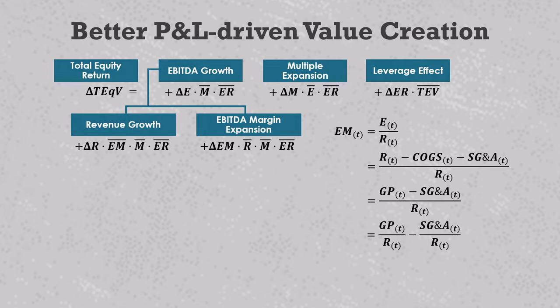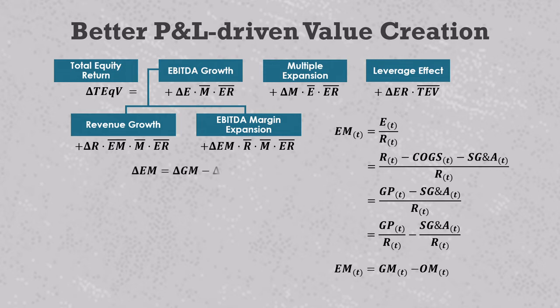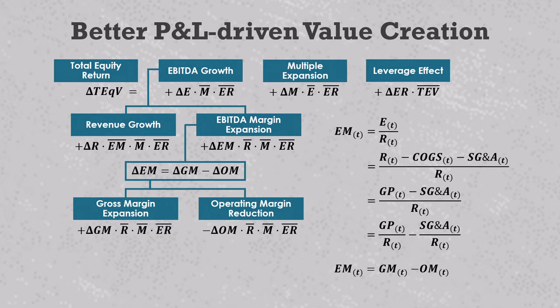We can split up the gross profit and the SG&A values into two terms that have revenue as a common denominator. The first value, gross profit divided by revenue, is the company's gross profit margin — simply gross margin on the P&L — a number often provided in GP fundraising or fund reporting materials, which we'll define as GM. The second value, SG&A over revenue, is not a common accounting term, but we'll define it here as the operating expense margin, or OM. You won't find this number on the quarterly report, but you can calculate it from the gross margin minus the EBITDA margin. This means we can define the EBITDA margin as the gross profit margin minus the operating expense margin. Since this is true, algebra says that the change in the EBITDA margin equals the change in the gross profit margin minus the change in the operating expense margin. Plugging this into EBITDA margin expansion gives us two new value drivers: gross margin expansion, driven by an increase in the gross profit margin, and operating margin reduction, driven by a decrease in the operating expense margin.